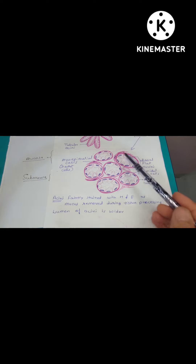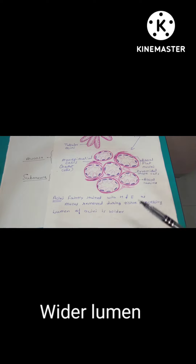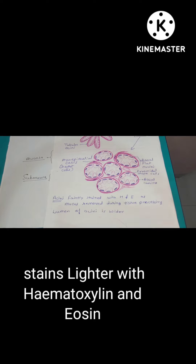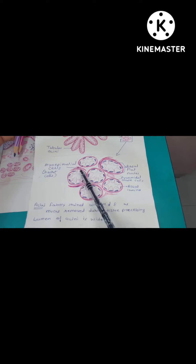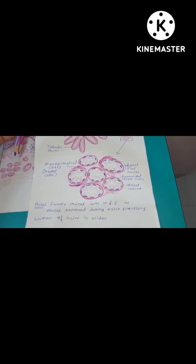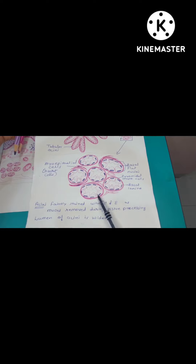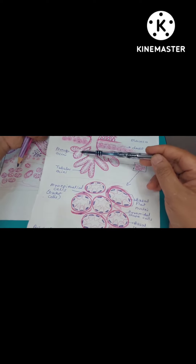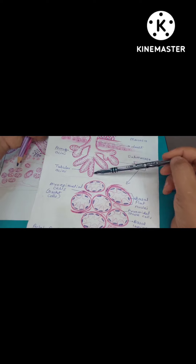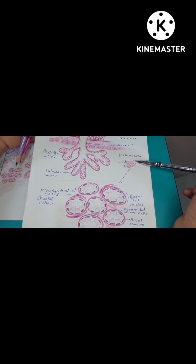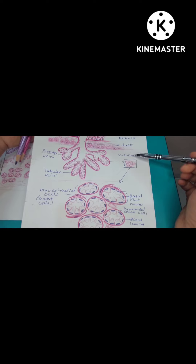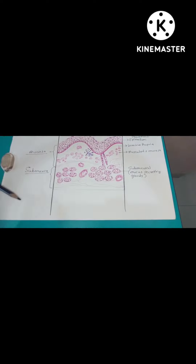In cross section, you can also see myoepithelial cells, also known as basket cells, which surround the mucous acini. Their contraction helps squeeze out secretions. This is a branched compound tubulo-alveolar gland present in the submucosa of the esophagus. The elastic fibers in the submucosa allow distension of the esophagus during passage of food. The glands are important for lubricating food and facilitating its movement.